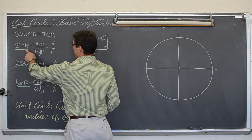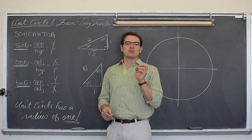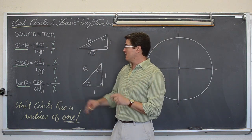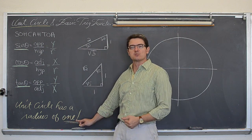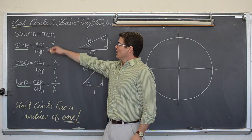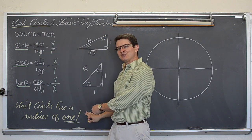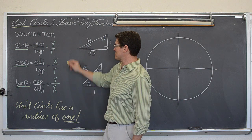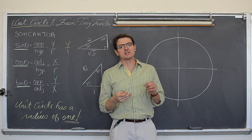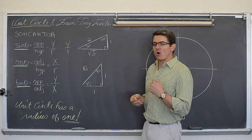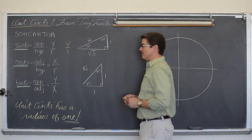Now you do want to definitely remember that sine is y over r. But for a unit circle only, the r value is always going to be one — that is what the definition says, the radius is one. So when you look at sine as y over r, as far as the unit circle is concerned, that is y over one, or just the y value. So the sine is the y coordinate of all the points we are going to have around the unit circle.